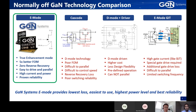The second point: because we're true E-Mode, we have a very good figure of merit in terms of RDS(on) times QG, which is multiple times better than Cascode GaN devices. This enables very fast switching, and combined with zero reverse recovery loss — because we don't have a body diode — our GaN device has very low switching loss and very high performance.